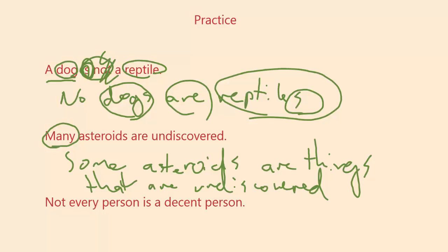Now take a look at the next proposition: 'not every person is a decent person.' You may have been tempted to translate this into an E proposition since it has 'not' in front of 'every person is a decent person.' But to say that not every single person is a decent person is to commit yourself to there being at least one person who is not a decent person. So the best translation of this sentence is 'some people are not decent people.'